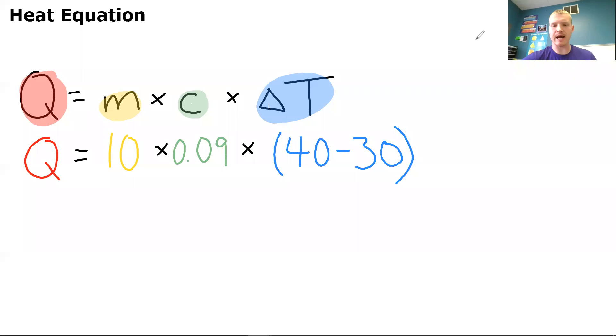So if this is how you set up your equation, so Q equals 10 times 0.09 times 40 minus 30, then you set it up correctly. Now we need to make sure that we type this into our calculator correctly. So the first thing that you need to do is you need to solve for your 40 minus 30 first because that is within our parentheses. So 40 minus 30, that is going to be 10.